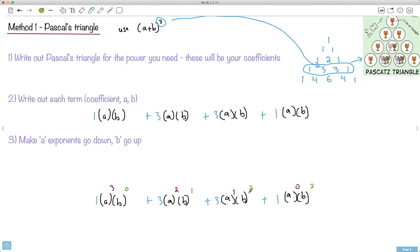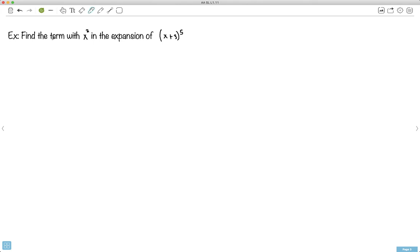Now you're not often going to be asked to do the entire expansion. They're usually going to be asking you to find a certain term, like find the term that has x equals 5, or find the constant term, that's the one that has no x's in it. So let me show you a particular example. Here's a question: find the term with x squared in the expansion of x plus 3 to the power of 5.